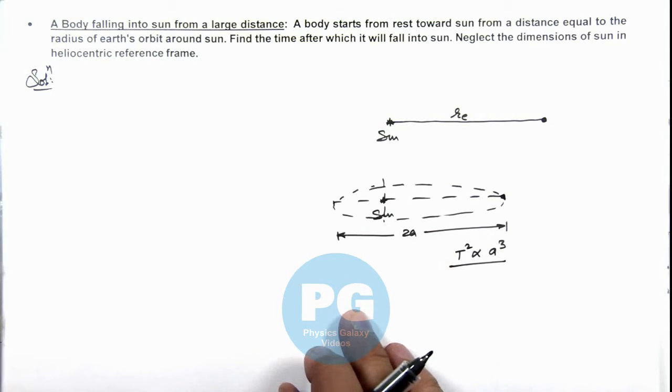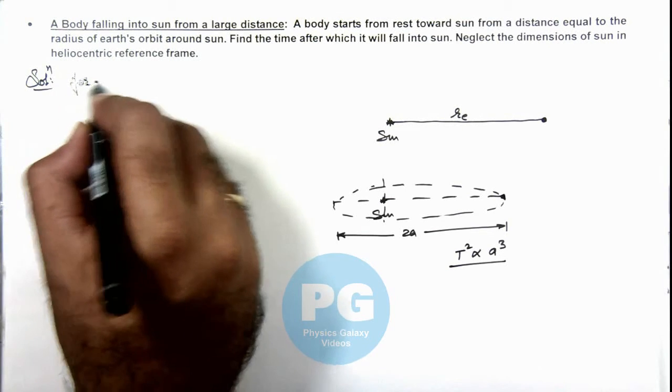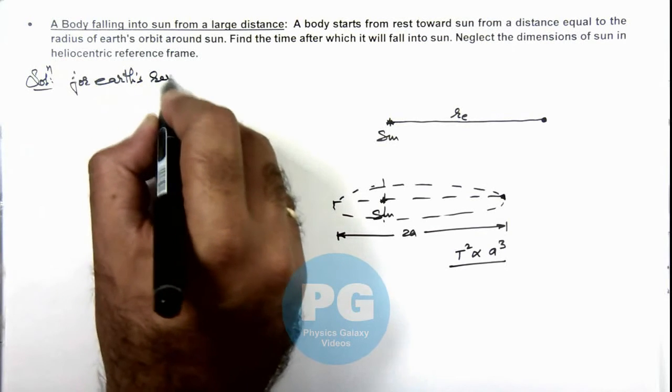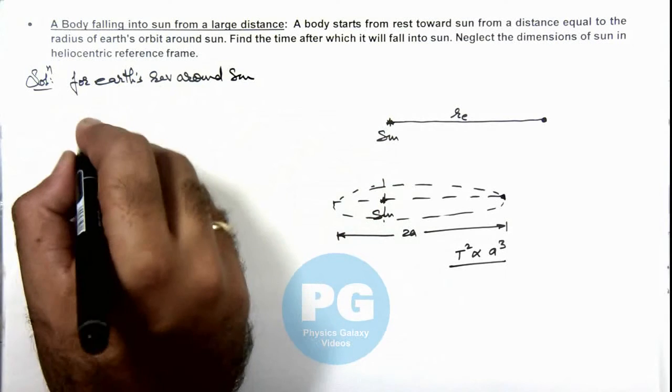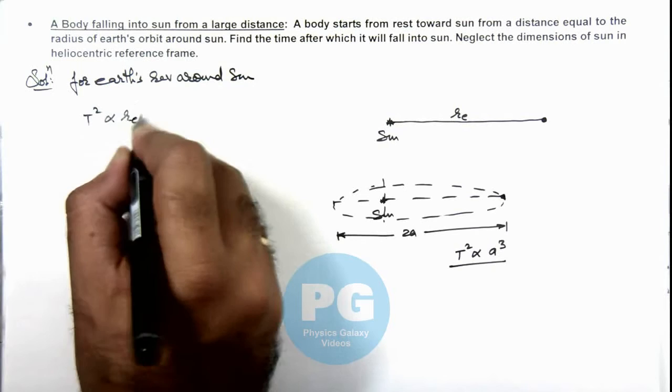Now in this situation if we talk about earth, we can write for earth's revolution around sun, we can write square of time period of earth is directly proportional to re cube.